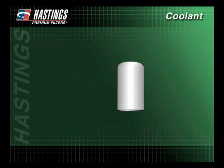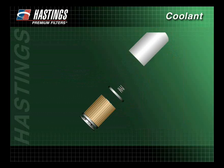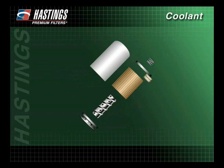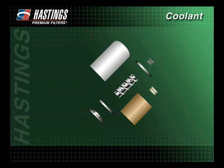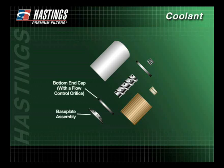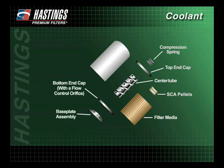To better understand how a coolant filter works, let's look at the components of a typical spin-on coolant filter with chemicals. The primary components are a base plate assembly, a bottom end cap with a flow control orifice, a center tube, the filter media, SCA pellets, a top end cap, a compression spring, and the canister.